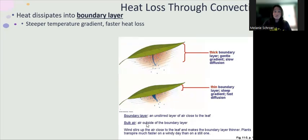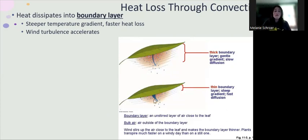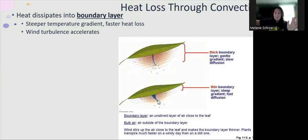Here we can see a thick boundary layer versus a thin boundary layer. Wind turbulence is also going to accelerate heat loss. If there is a lot of wind, the boundary layer is blown away really quickly, keeping the temperature gradient much steeper and therefore causing heat to dissipate pretty quickly. Wind turbulence disturbs the boundary layer, blowing away the air filled with heat and moisture, which accelerates the loss of heat — and as we'll see, moisture as well from the leaf.